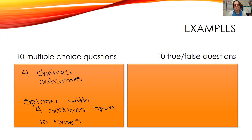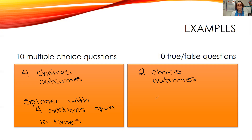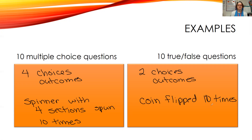The next example: 10 true-false questions. For a true-false question, we know we have two choices or two outcomes. What's something that represents two outcomes very well? That's a coin. We would flip a coin 10 times. Each time we flip, we would simulate answering one question.